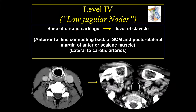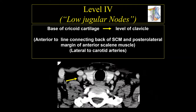Level 4 lymph nodes run from the base of the cricoid cartilage down to the level of the clavicle. Technically they run from the sternocleidomastoid muscle anteriorly to the anterior scalene muscle. If you remember the line connecting the back of the sternocleidomastoid muscle, you'll be able to identify exactly where those level 4 lymph nodes are located.